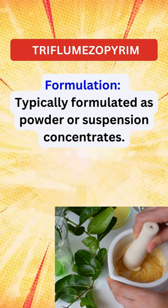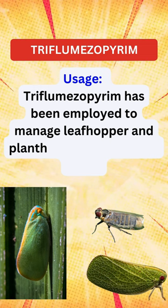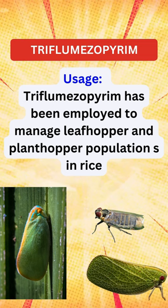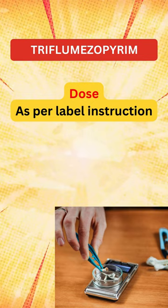Best uses: Triflumezopyram is utilized for controlling various sucking and chewing insect pests in crops including vegetables, fruits, and ornamental plants. It has been employed to manage leafhopper and planthopper populations such as Nilaparvata lugens and Sogatella furcifera in rice. It exhibits minimal effects on beneficial insects and predatory spiders in the rice paddy.